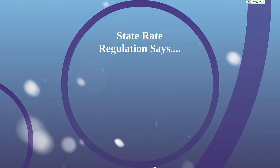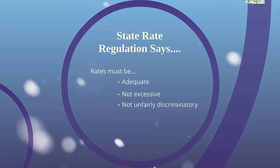Keep in mind that state rate regulation plays an important part in actuarial rating. The state government says that rates must be adequate, not excessive, and not unfairly discriminatory. Every state has a law that says this, and we'll talk more about this when we cover government regulation of insurance. Some states even have what's called prior approval, which says that insurance companies cannot use rate changes until the state insurance department approves those changes.